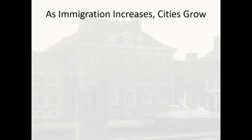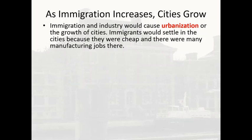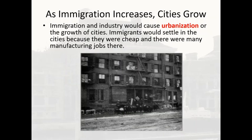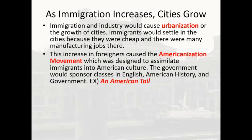As immigration increased, cities grew. Immigration and industry would cause urbanization — the growth of cities. Immigrants settled in cities because it was cheaper to live there and there were many manufacturing jobs. They had to live close to their jobs since they didn't have cars and needed to take advantage of public transportation. Many immigrants lived in tenements — often two-room apartments where four to five families would live. The increase of foreigners prompted the Americanization movement, designed to assimilate immigrants into American culture through government-sponsored classes in English, American history, and government.